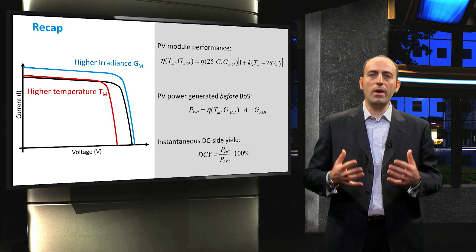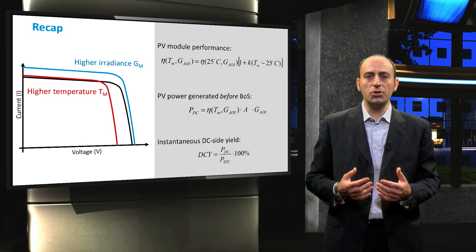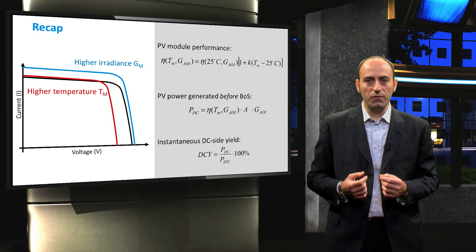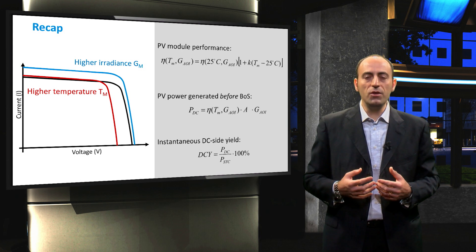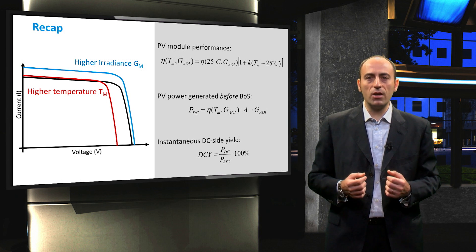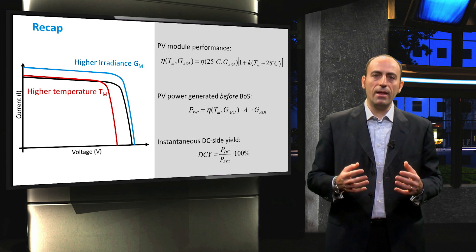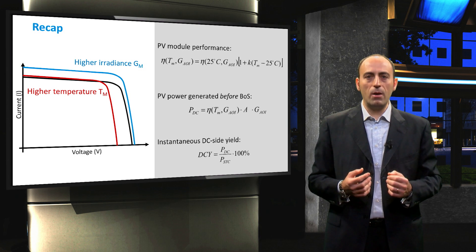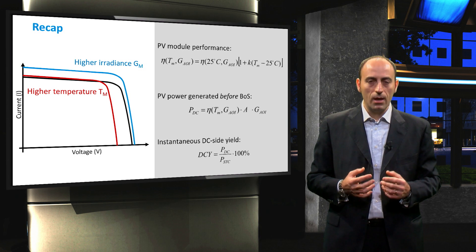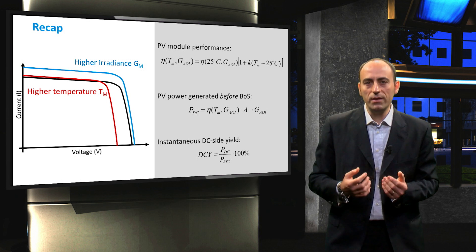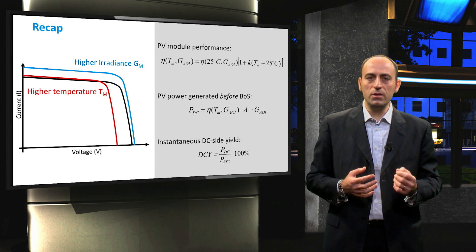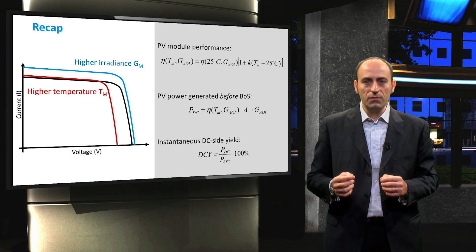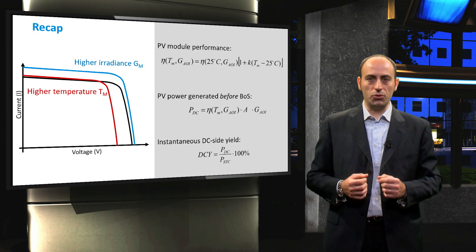In this video, we have seen that a higher temperature has a detrimental effect on the efficiency, while a higher irradiance increases the short circuit current. The efficiency of the module was computed as function of these two parameters, and then we obtained the DC power generated from a PV panel. Lastly, in order to evaluate the performance of the PV system, we introduced the instantaneous DC side yield. In the next video, we will see how to estimate the temperature of the module.